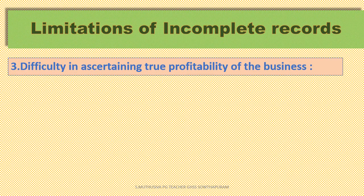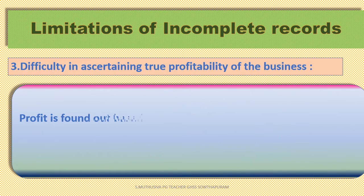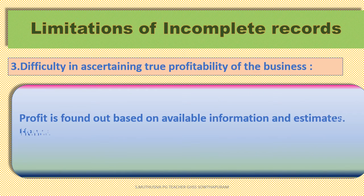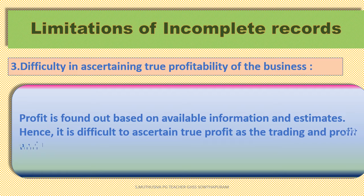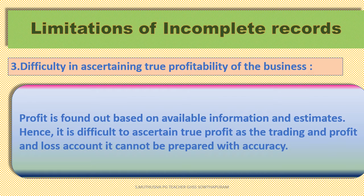Third limitation — Difficulty in Ascertaining True Profitability of Business. Profit is found out based on available information and estimates. Hence, it is difficult to obtain true profit as the trading and profit and loss account cannot be prepared with accuracy.